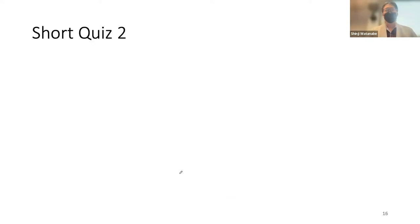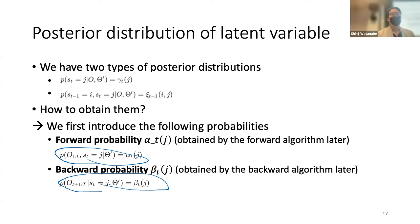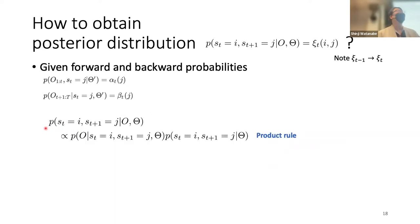To compute zeta and gamma, we first define the forward probability alpha and the backward probability beta. Given these, we can compute the previous gamma and zeta values. First, starting from the definition and applying the product rule and removing the normalizing constant, we get the foundational equations. Next, we decompose the sequence: O_{1:t} and O_{t+1:T}, to simplify the following formulation.